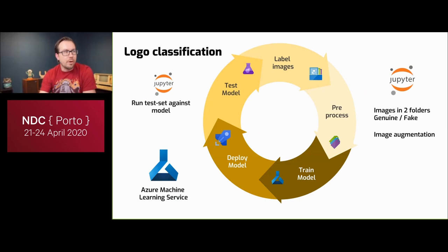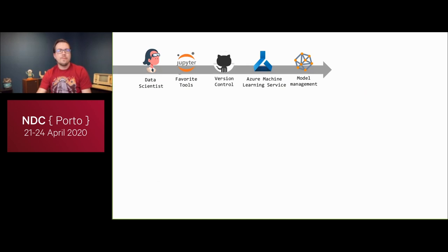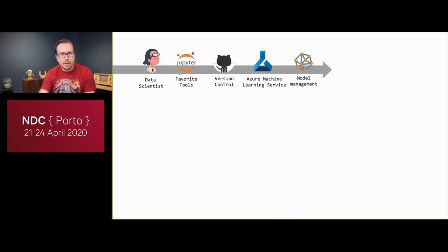For teams with data scientists, developers, and operations, the process should look like this: the data scientist creates the model, experiments with data, ensures it's diverse and good enough, then delivers the model to a service in Azure called model management. The developer wraps the model in software, chooses the right programming language, makes the API fast, and uses their own tools, version control, and build pipelines.